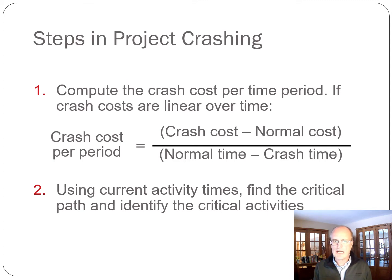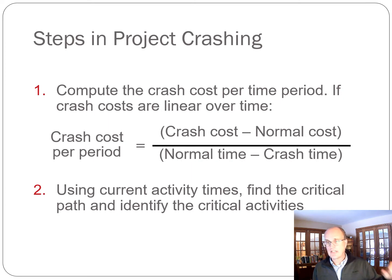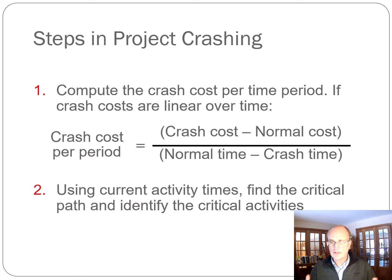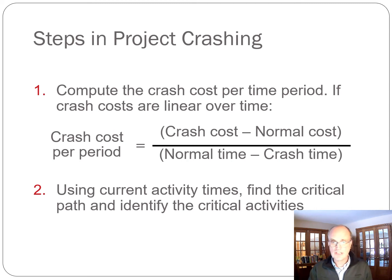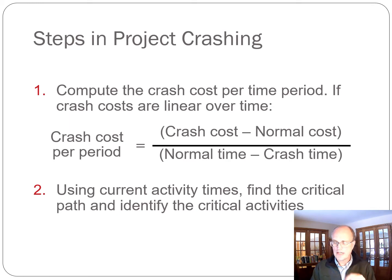The cost with the shorter timeline versus the normal cost over the crash time gives you a crash cost per period. You usually want to crash one unit of time at a time — that's a mistake students often make — because another path can become critical. There are also examples where the first day costs X and the second period costs X plus 10%, so as long as you know what each incremental period of shortening costs, you can make the crashing decisions. I'll give you the crash cost per unit of time in the subsequent example.